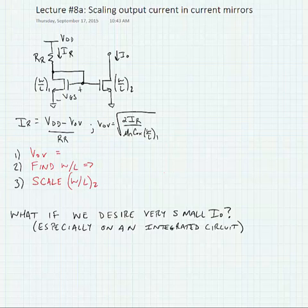Today we're going to investigate scaling the output current in current mirrors. We know how to find the output current in a bipolar current mirror. If we want to do it in a MOS current mirror, we're going to use the following relation. We know that the reference current is equal to VDD minus VGS for our current mirror.